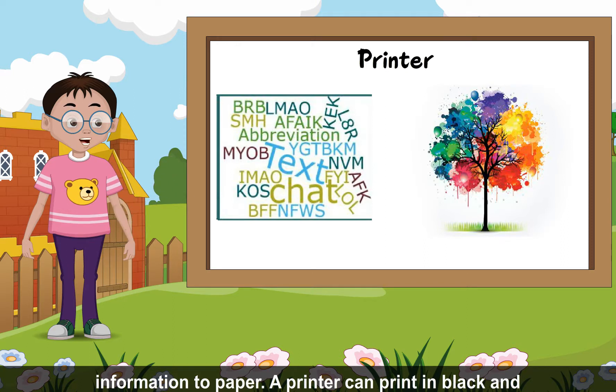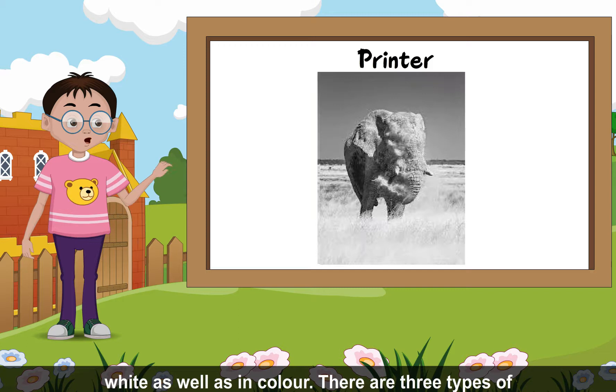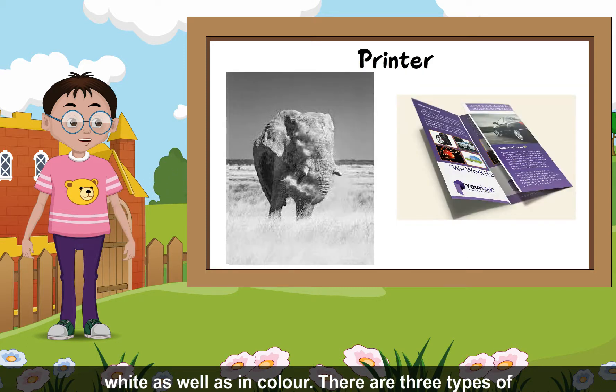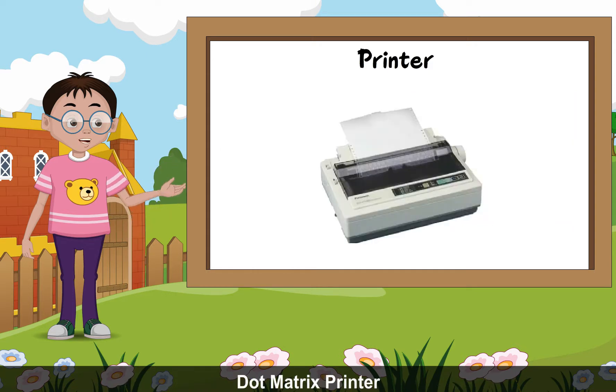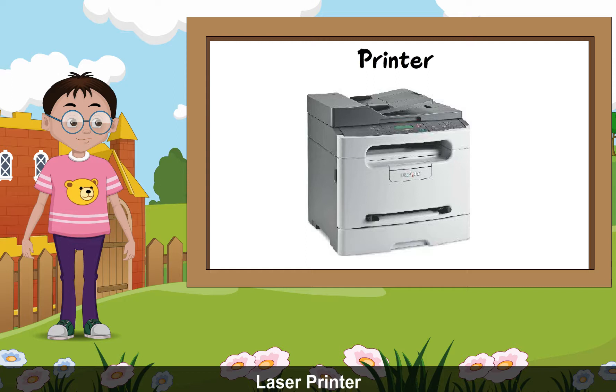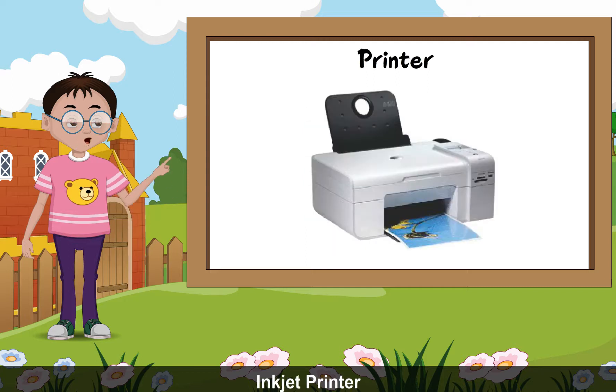A printer can print in black and white as well as in color. There are three types of printers: dot matrix printer, laser printer, and inkjet printer.